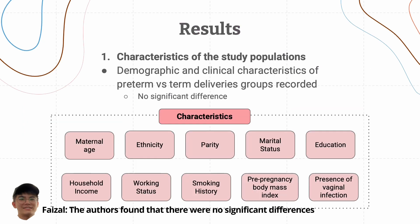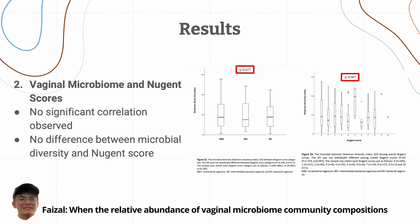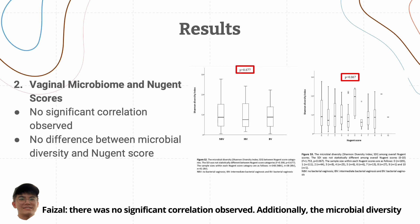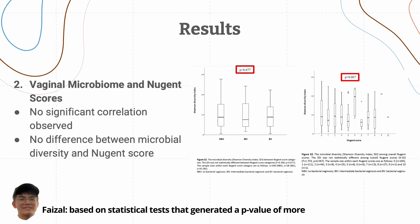The authors found that there were no significant differences for the demographic and clinical characteristics of the study population. When the relative abundance of vaginal microbiome community compositions were put against the Nugent scores assigned, the authors found that there was no significant correlation observed. Additionally, the microbial diversity based on the Shannon Diversity Index (SDI) was also found to be not different between the different Nugent score categories. Both findings were based on statistical tests that generated a p-value of more than 0.05, as shown in the red boxes.